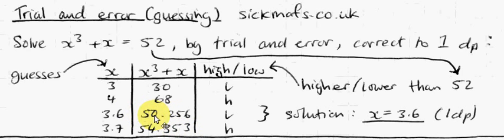And as you can see, this answer is slightly closer than this answer is to 52. So basically, 3.6 is the closest value to x, which will give you the right answer. So 3.6 is the correct answer to one decimal place.